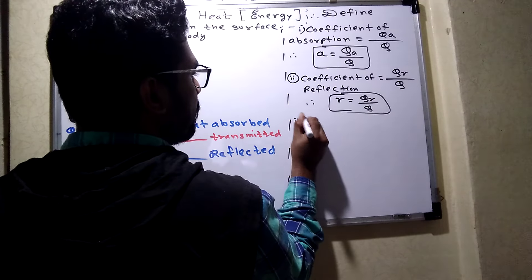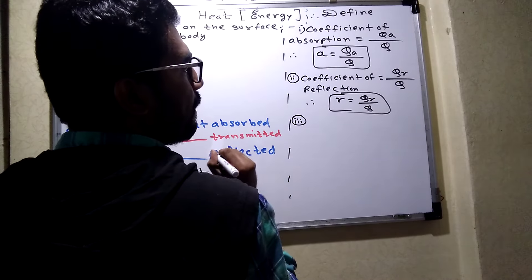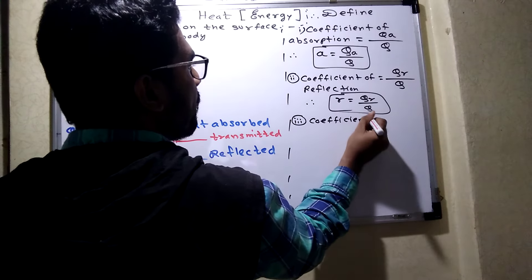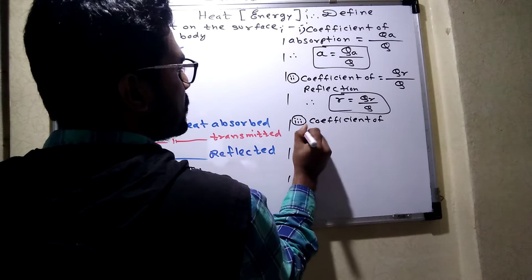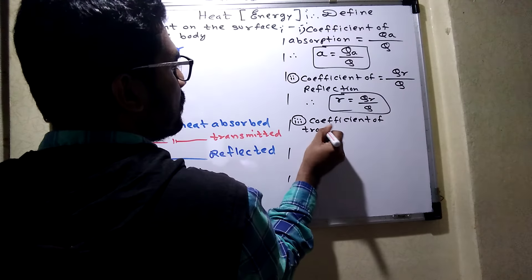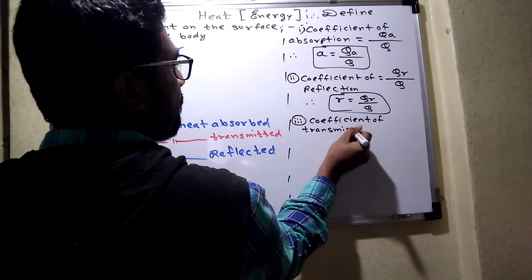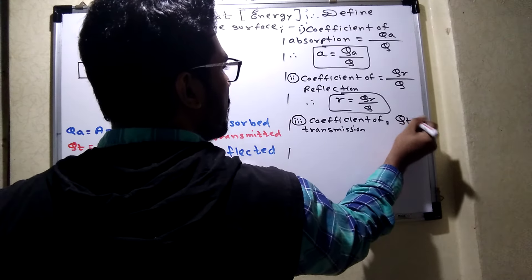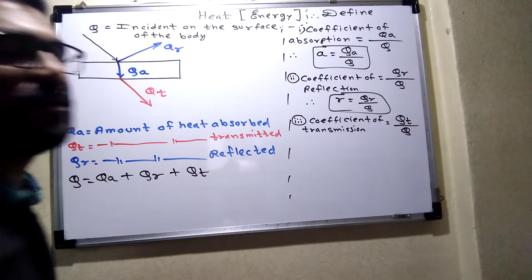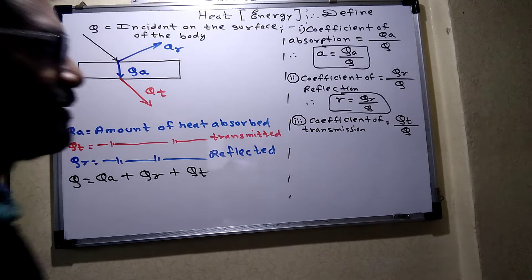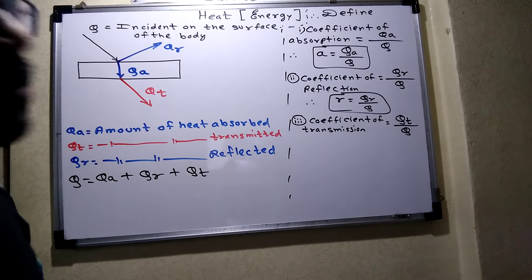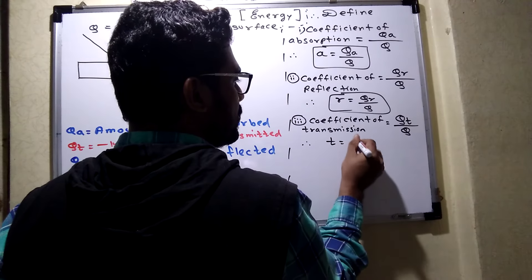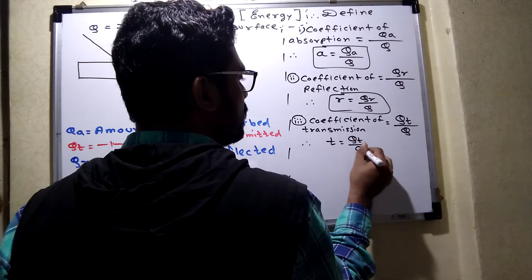Third, the coefficient of transmission. This is the amount of heat transmitted upon the amount of heat incident. The symbol is 't', and the formula is Qt upon Q.